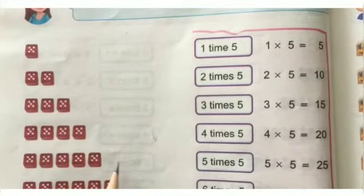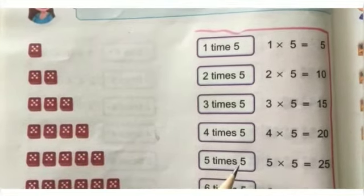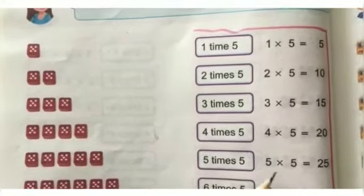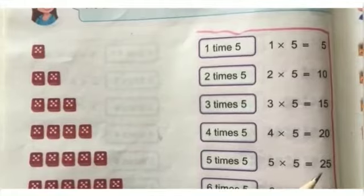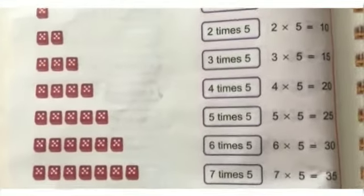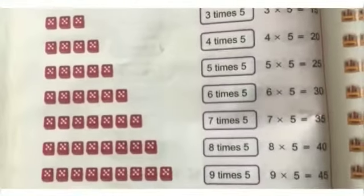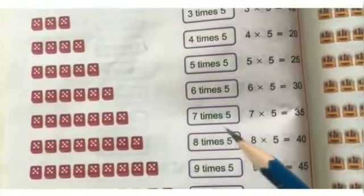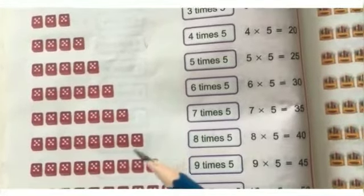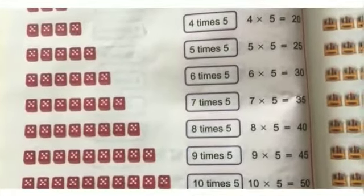Next, when we add one more dice it becomes five dices with five dots. We can read it as five times five, write it as five multiply by five, and it is equal to twenty-five. We will repeat this method again to create the complete table of five.